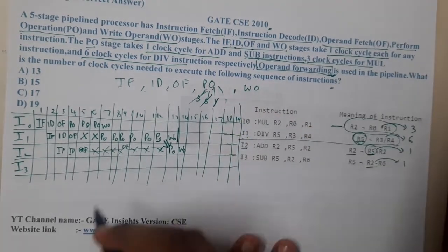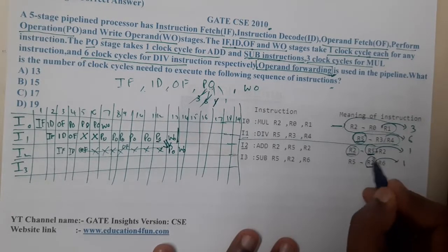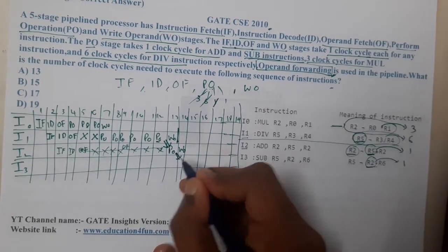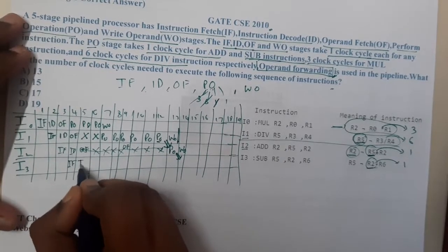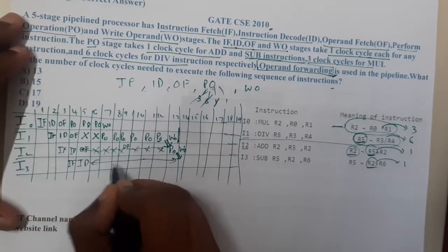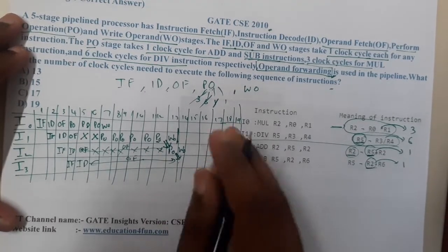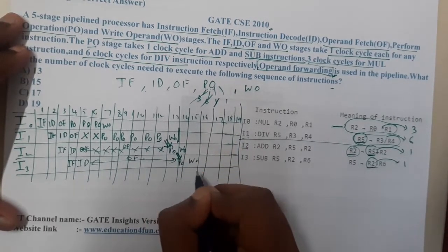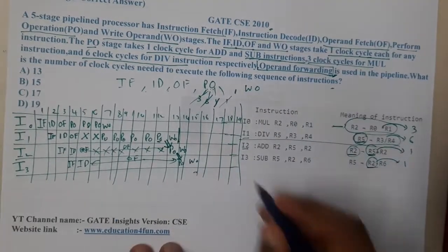Once the forwarded value is available, I2 can perform its PO (addition, one clock) then WO. Similarly, I3 depends on R2 from I1. I3 goes through IF, ID, OF — waiting until the forwarded value is ready — then performs its PO (subtraction, one clock) and WO.